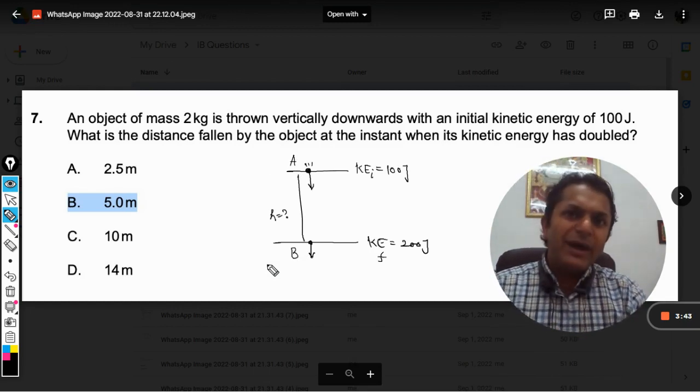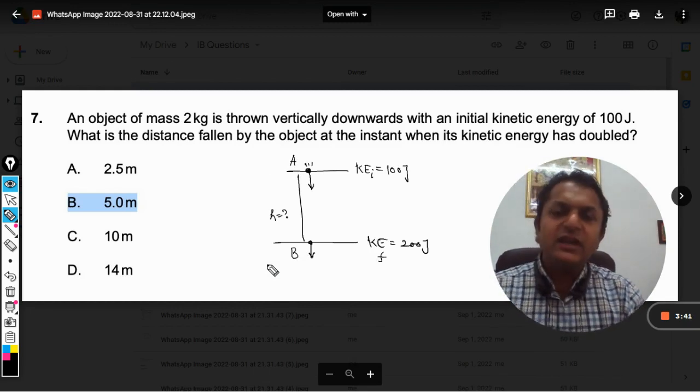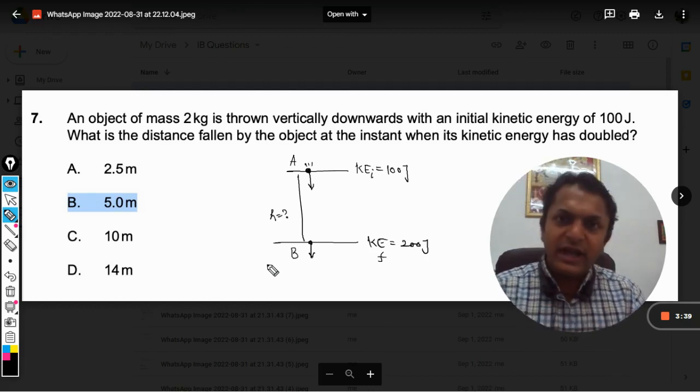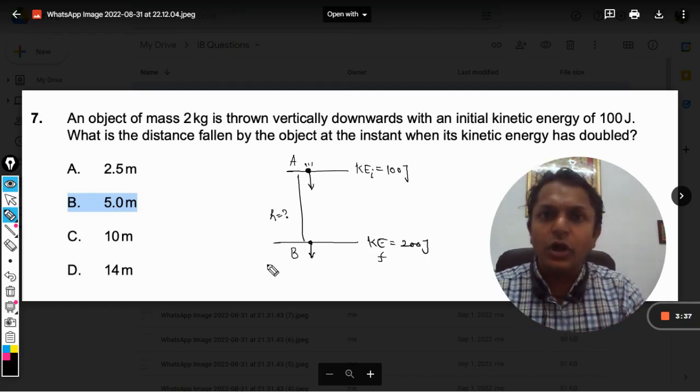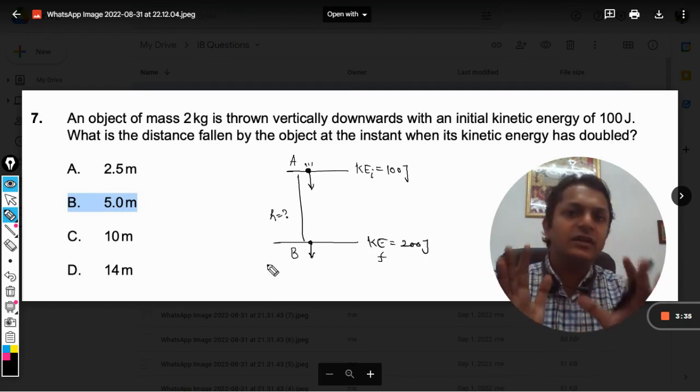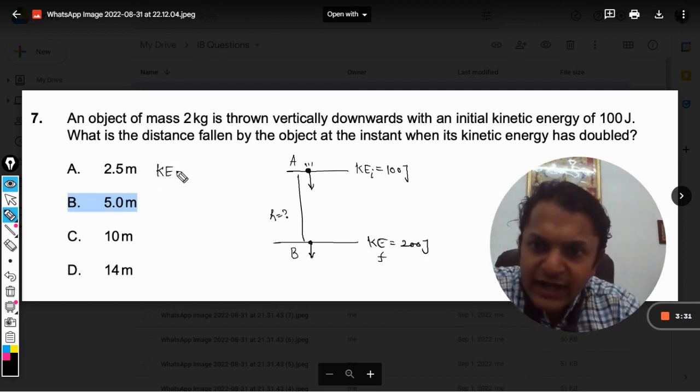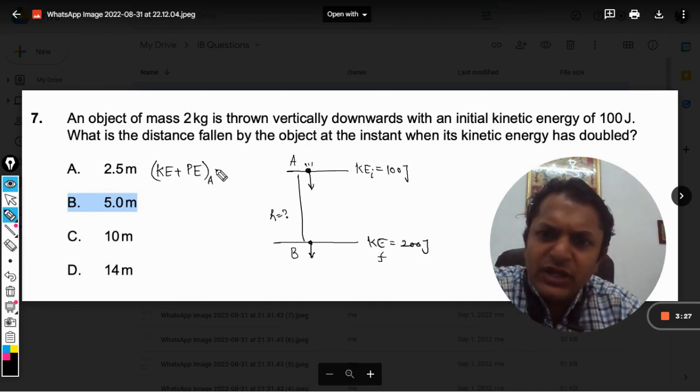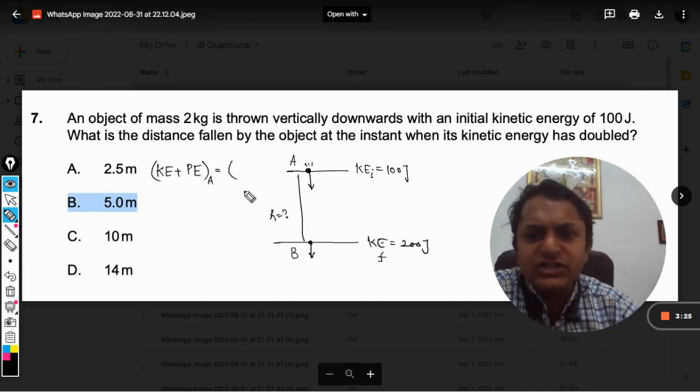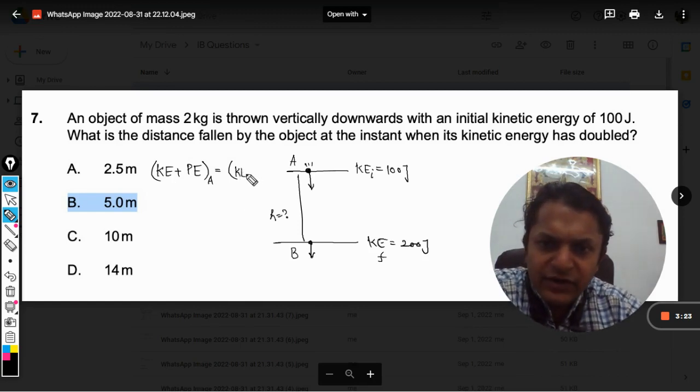Now by saying the total energy, what we mean is mechanical energy. And what is mechanical energy? It is the sum total of potential energy and kinetic energy. So the total of kinetic energy and potential energy at A should be equal to the total energy at B. I will write kinetic energy and potential energy at B.